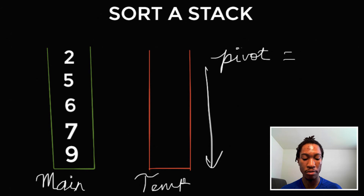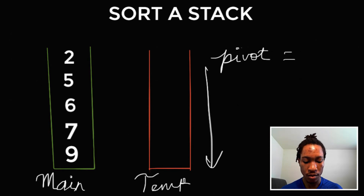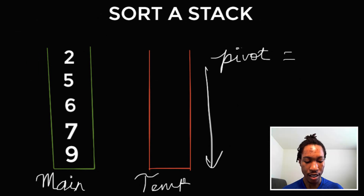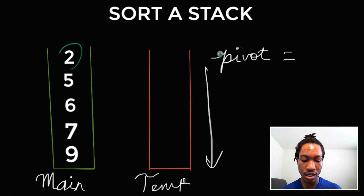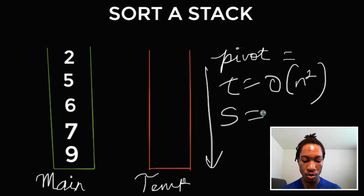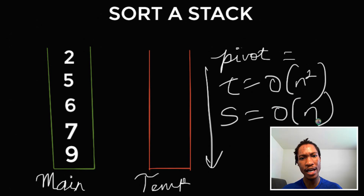I really like questions that have some visual components — those are good questions for interviews because they strike conversation with your interviewer. What you have to do now is return the main stack and you're done. The time complexity is O(n²) since we go through the main stack to select a pivot element and through the temporary stack, both containing at most n elements. For space complexity, we're storing two stacks that contain n elements each, so total space complexity is O(n).